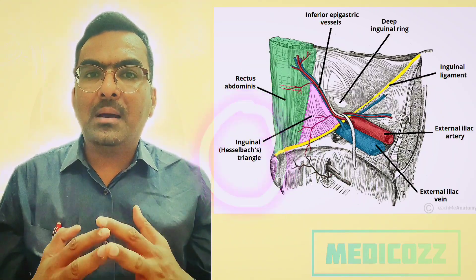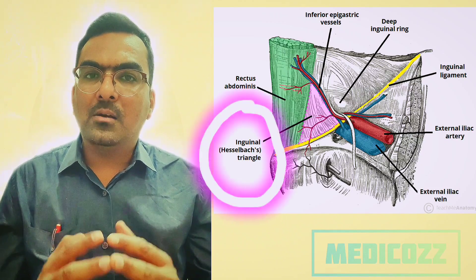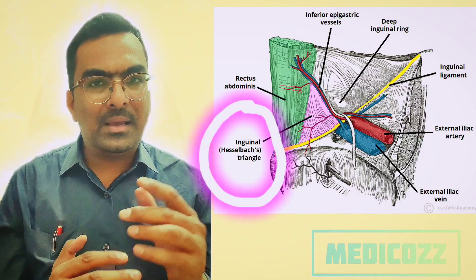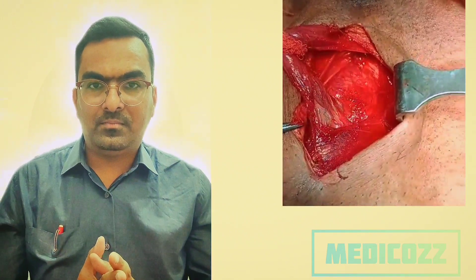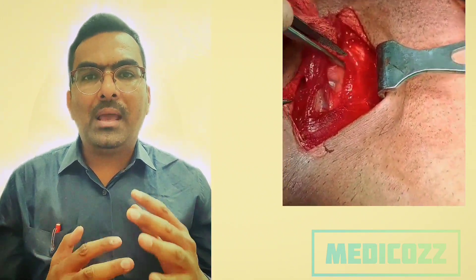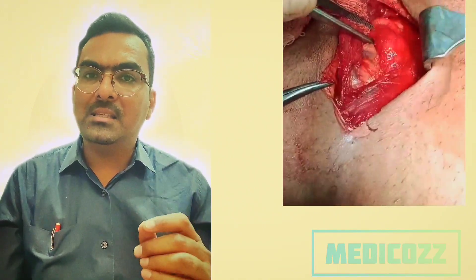The superomedial compartment of the myopectinial orifice corresponds to the original Hasselbach triangle from where the direct inguinal hernia comes out. Understanding the proper exposure of these compartments is essential for correct diagnosis and effective surgical repair.